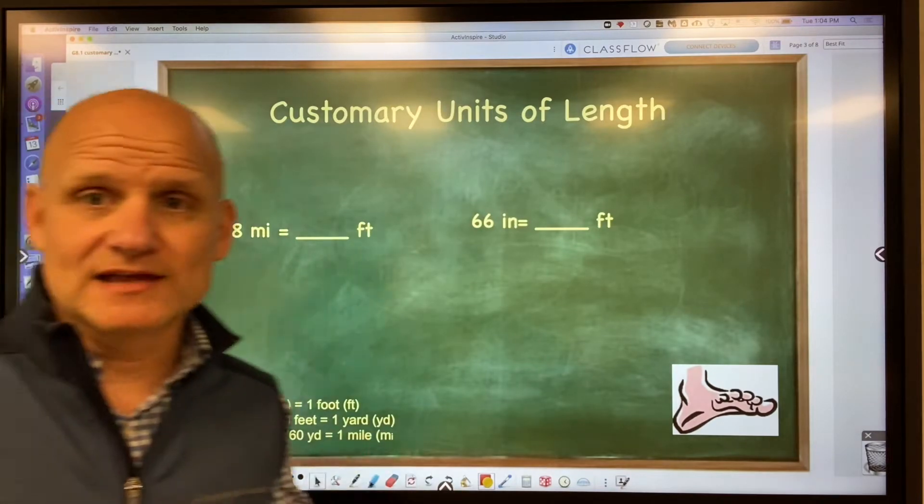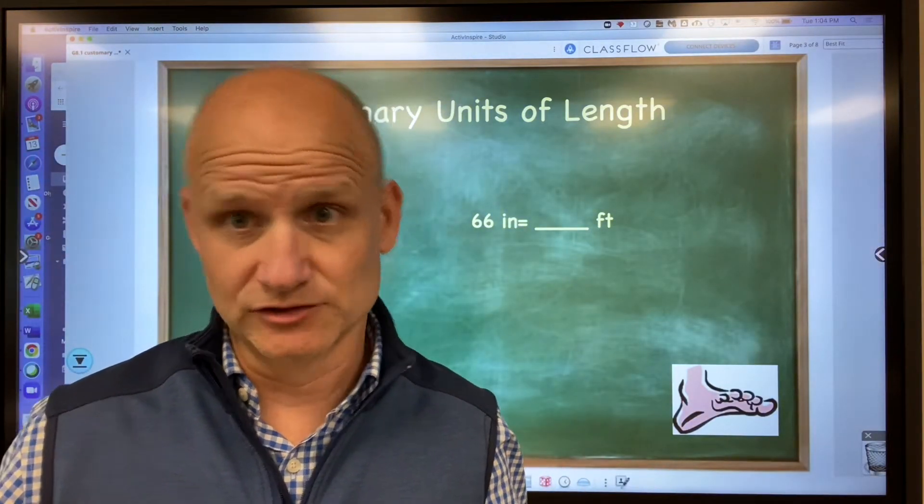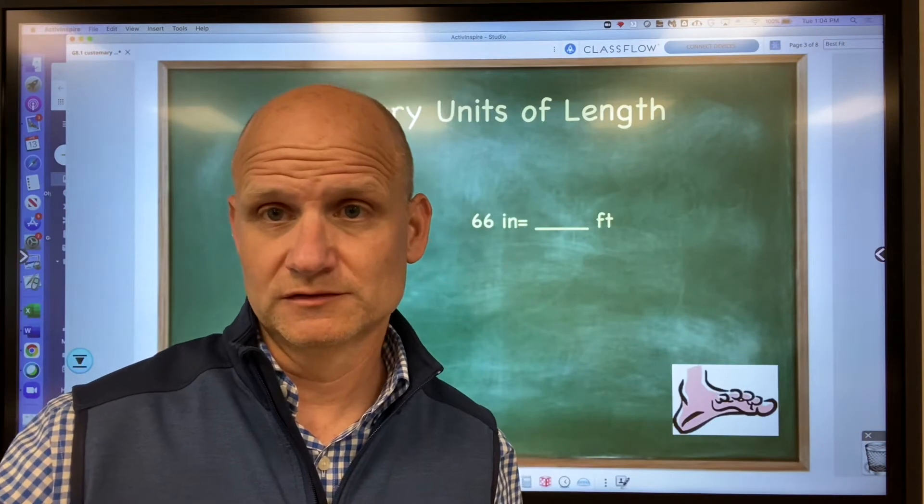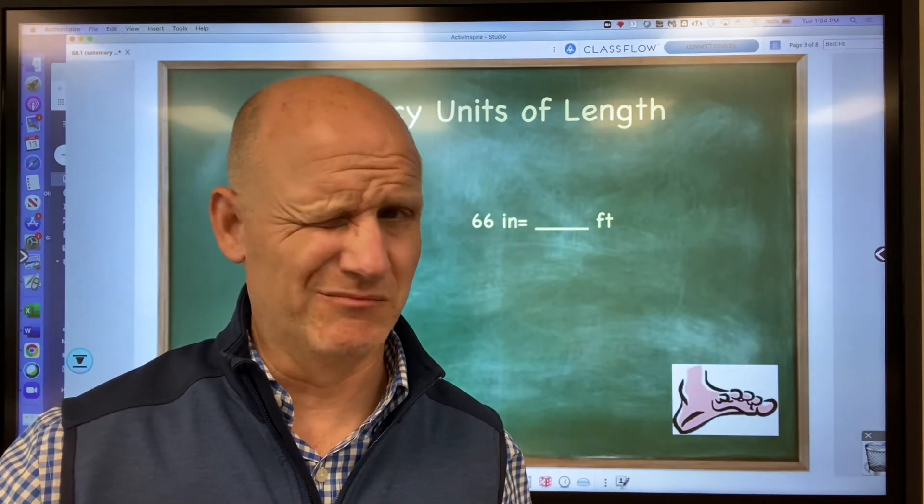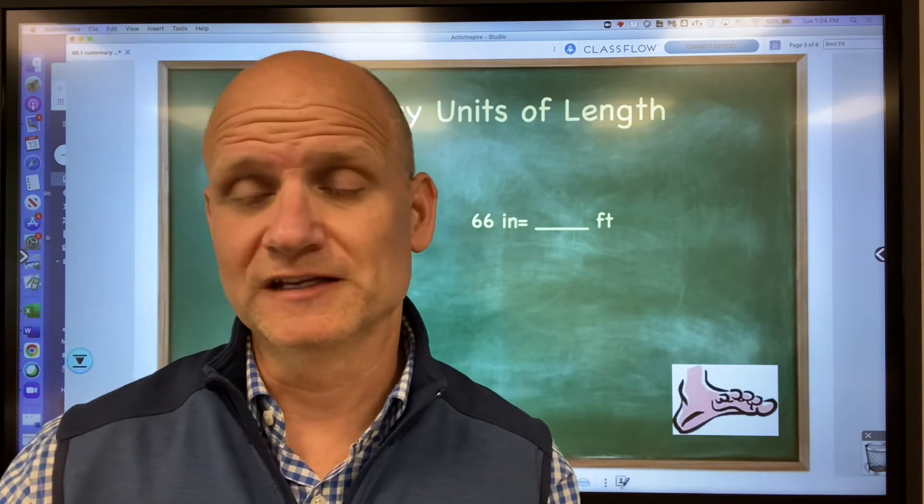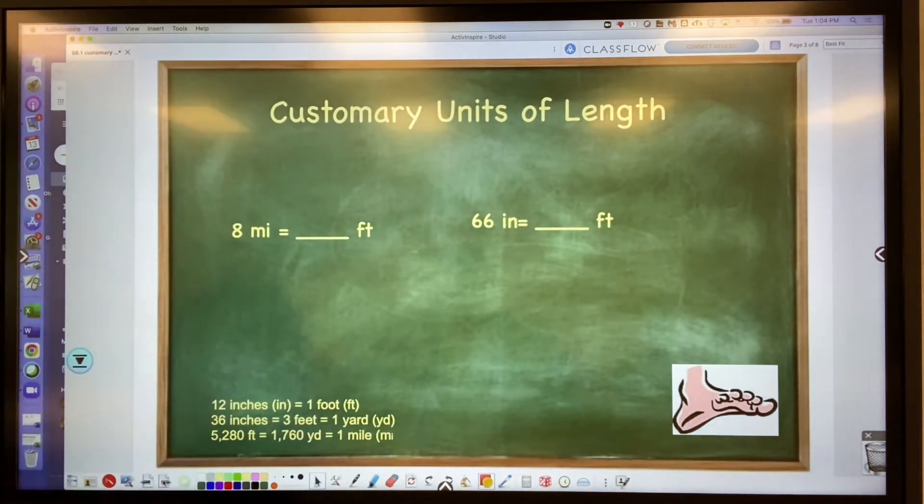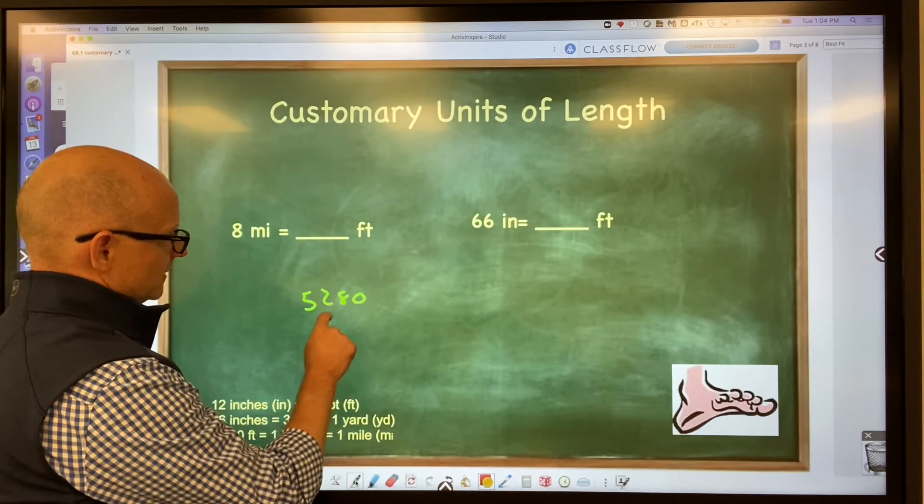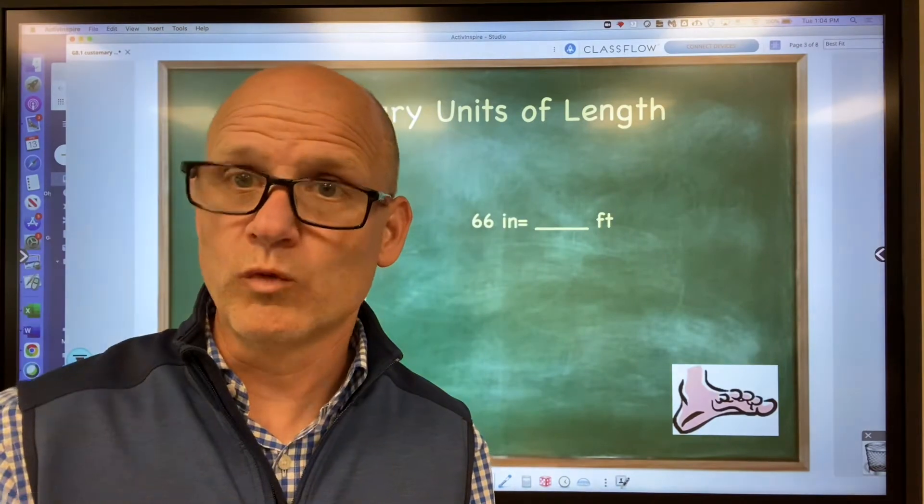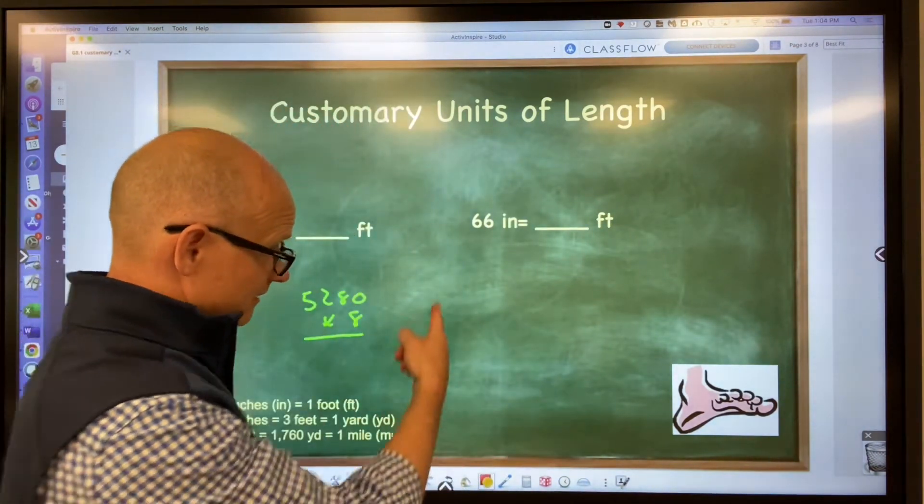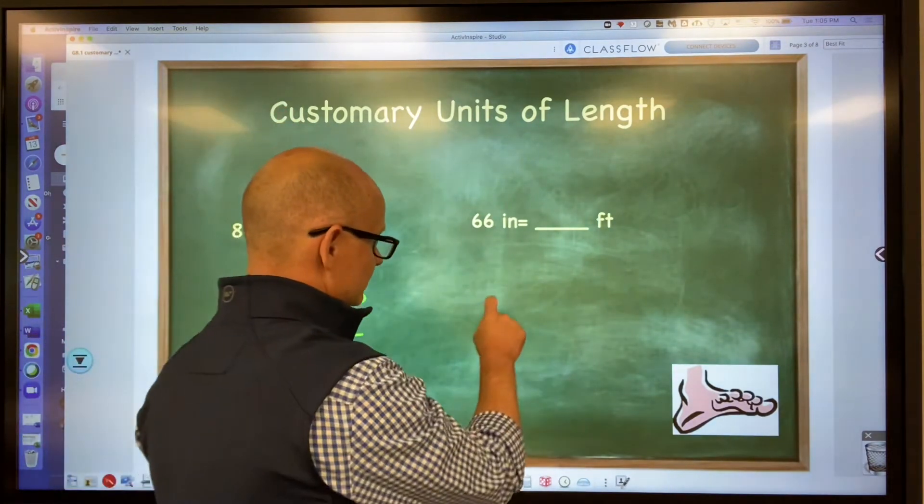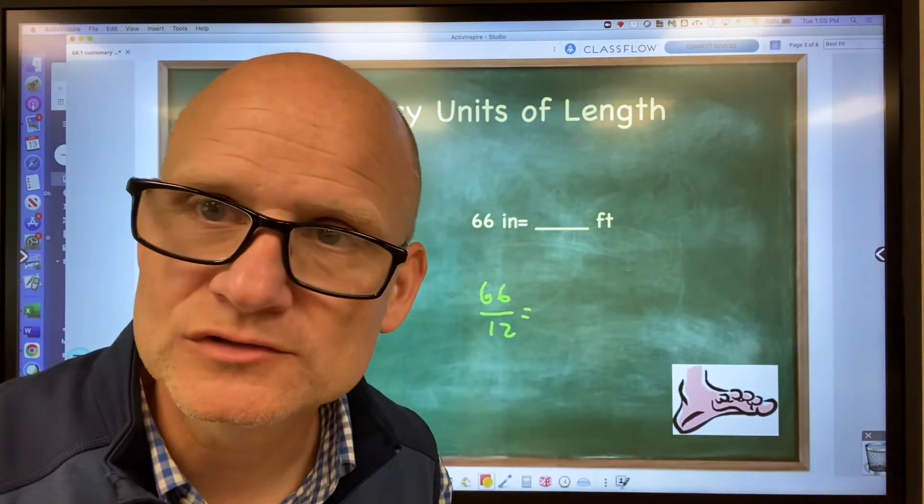What you're going to be asked to do in this unit with customary units is converting a unit from one unit to another. Like changing eight feet to yards or changing eight miles to feet. Most of us already know what to do in these particular problems. If I say eight miles equals how many feet, most of us know to take 5,280 and multiply by eight. Most of us know whether to multiply or divide. Like here, if I was taking 66 inches, I would divide that by 12 to find out how many feet. But let's say you're that one student that doesn't know that.